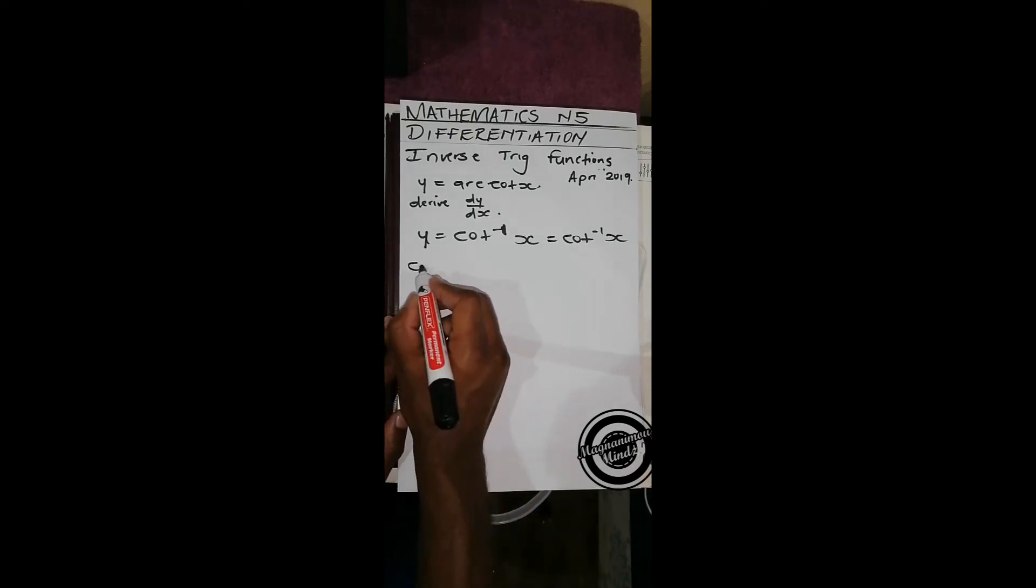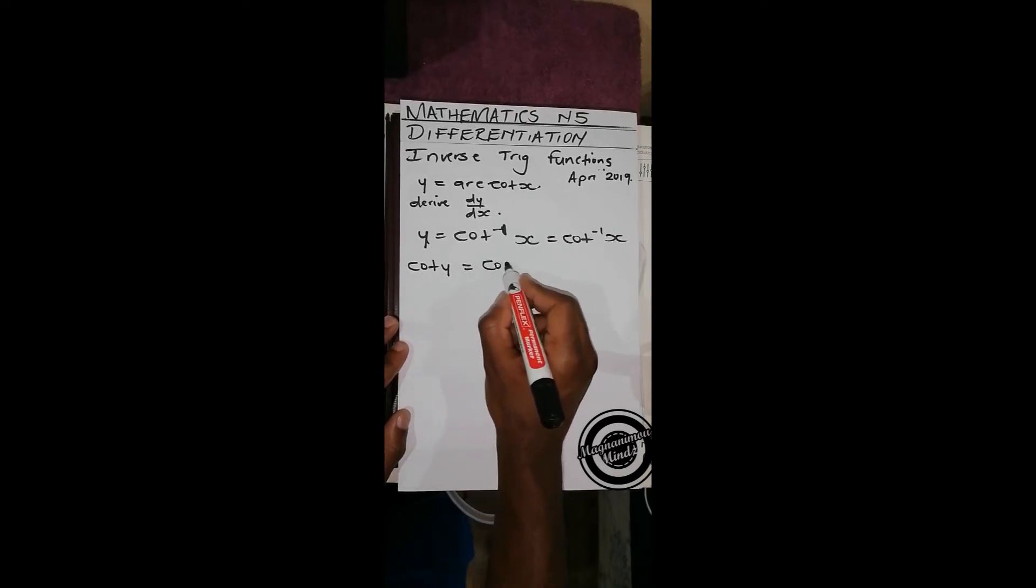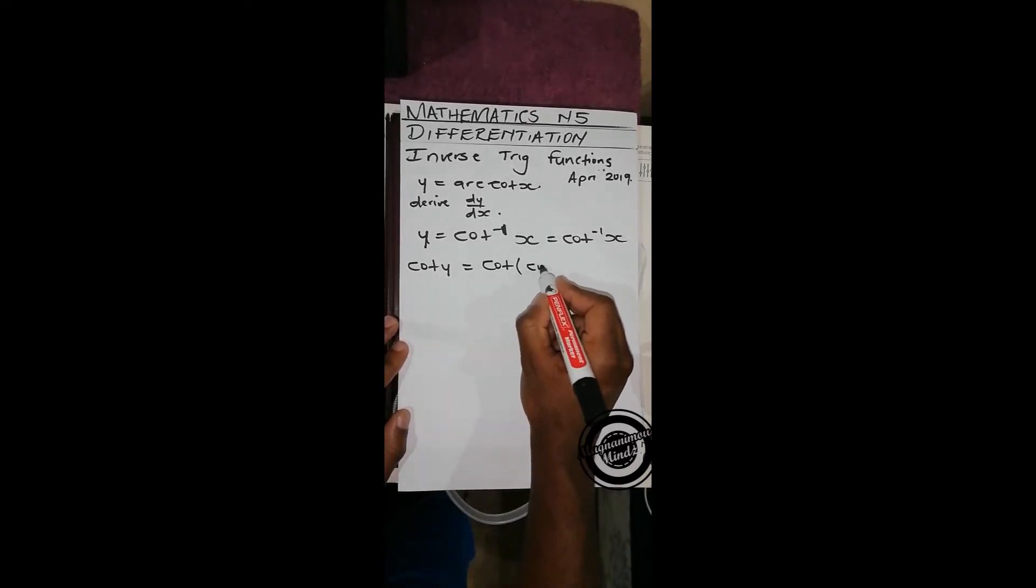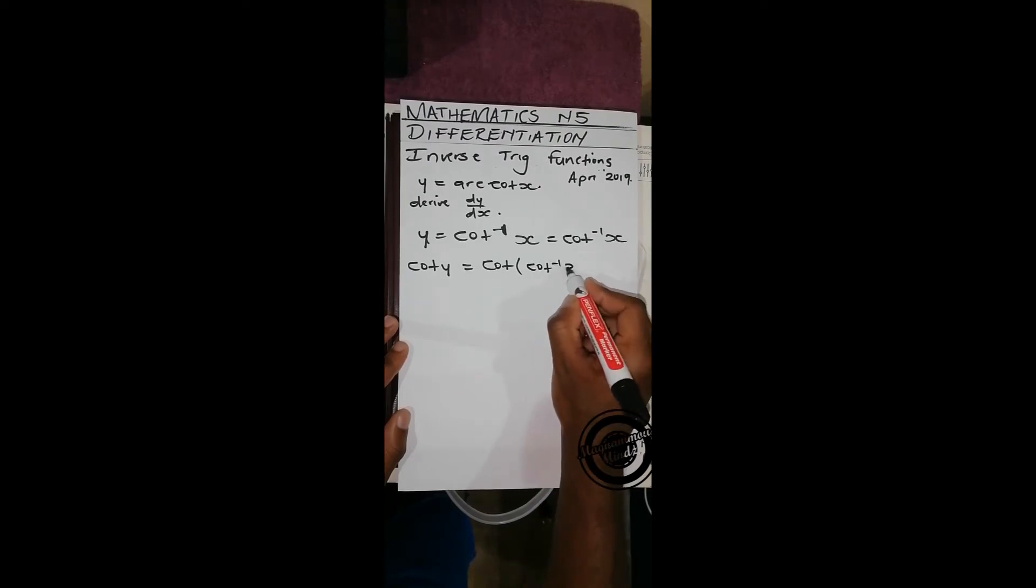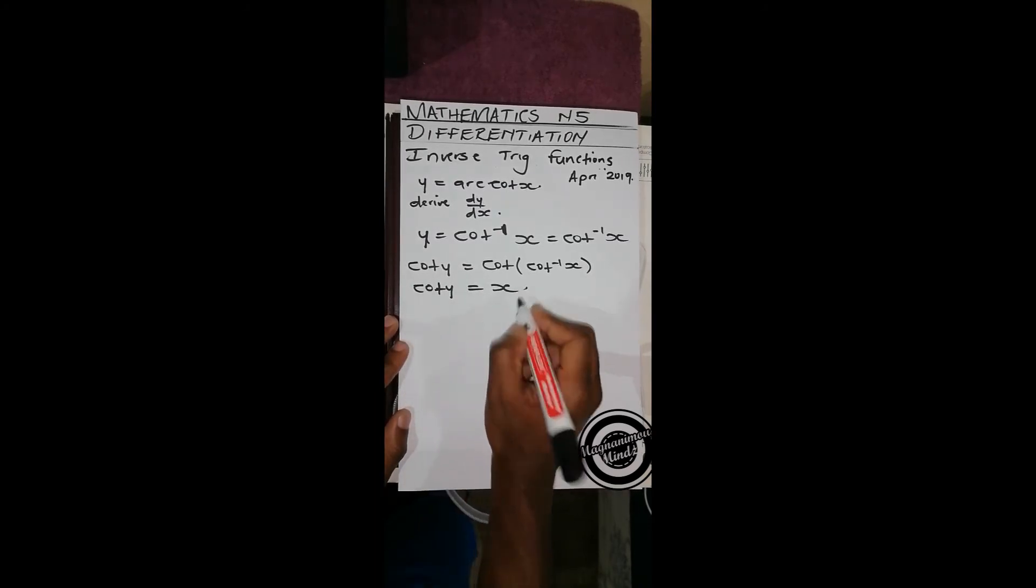To do that, we'll get cot y equals cot of cot inverse of x. Then we'll be left with cot y equals x.